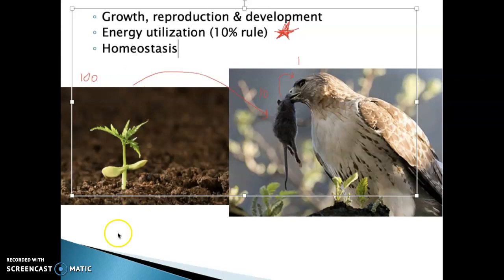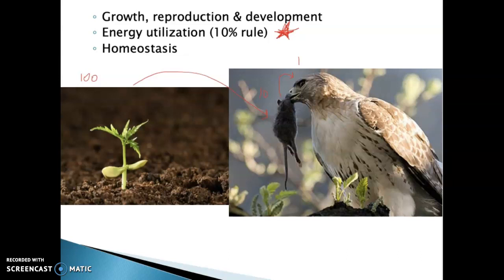Homeostasis. All living things have to maintain balance and homeostasis and equilibrium. Your body temperature, your blood pH, that hawk's metabolism rate, that's homeostasis. So if you get too hot, you start to sweat, maintaining homeostasis. You get cold, you shiver. Your body's trying to maintain homeostasis.